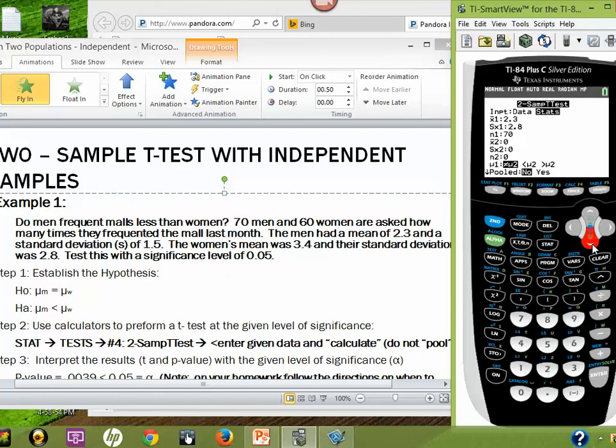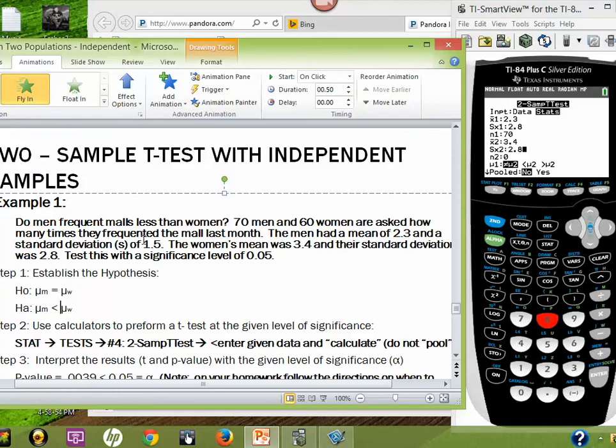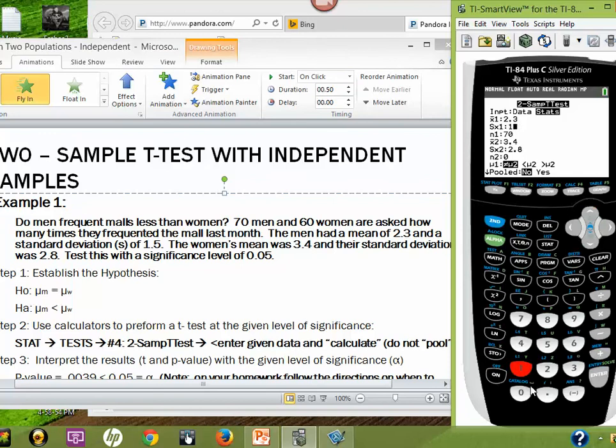For the women, they had a mean number of times as 3.4. The standard deviation was 2.8. Actually, I think I put the wrong standard deviation in for men. I looked at the wrong number here. The standard deviation for men was rather 1.5. So, I'm going to go back up there and fix that. And then, for this test, we are doing a left-tailed test, men less than women. My group 1 here that I put, less than group 2. So, we're going to hit enter over the less than group 2 symbol. And then, in this case, we are not going to pool our results. So, just hit no on the pool.